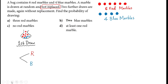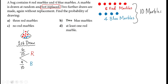For the first draw, you can take either a red or a blue marble from the bag. The probability of taking a red will be six out of ten, because you have a total of ten marbles inside the bag. The probability of taking a blue is four out of ten. Both branches should sum to one: six over ten plus four over ten gives ten over ten, so the probability is one — one hundred percent.